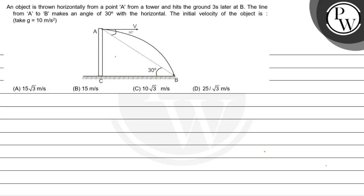Hello watcho, let's read out the question first. An object is thrown horizontally from a point A from a tower and hits ground 3 seconds later at B. The line from A to B makes an angle of 30 degrees with the horizontal. The initial velocity of the object is, we have to take value of g as 10 meter per second square.